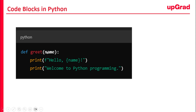For example, def greet(name) — all the statements here would belong to this particular block which is the def block. In this function, both the print statements are indented by four spaces — 1, 2, 3, 4. This spacing indicates that they are part of the greet function's code block.